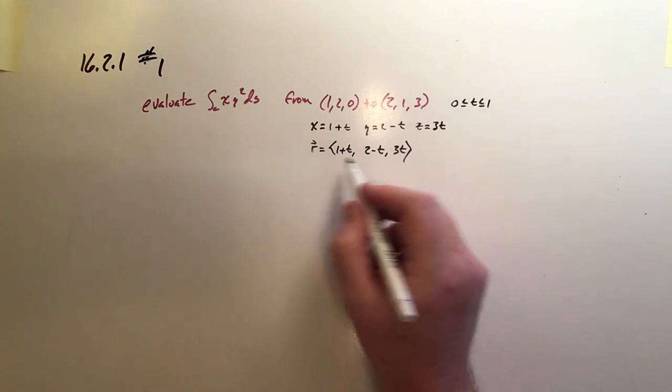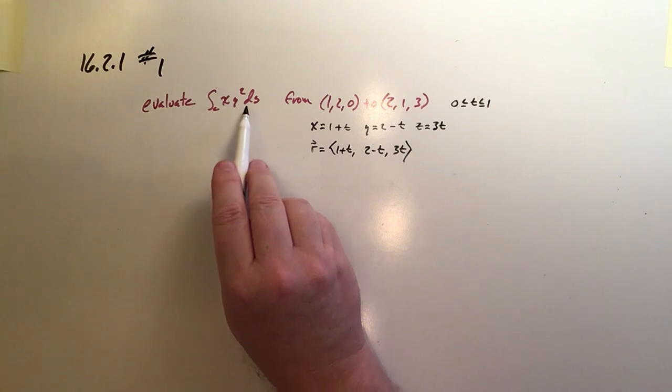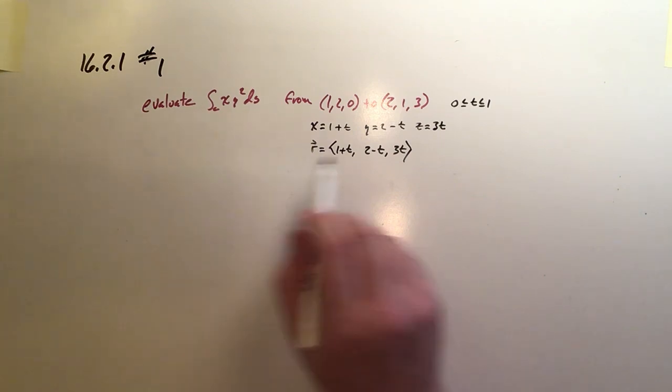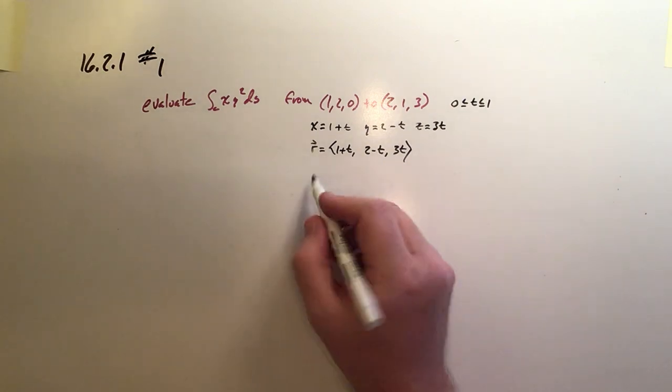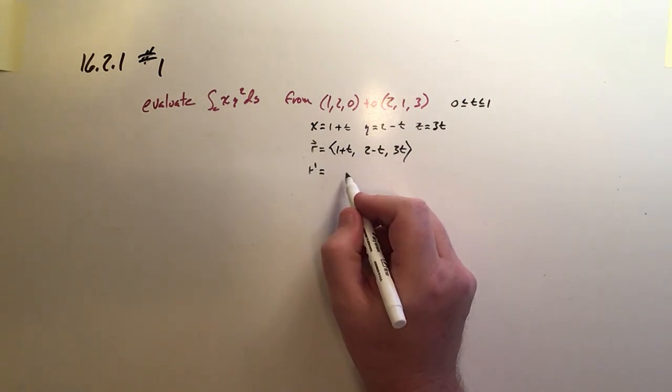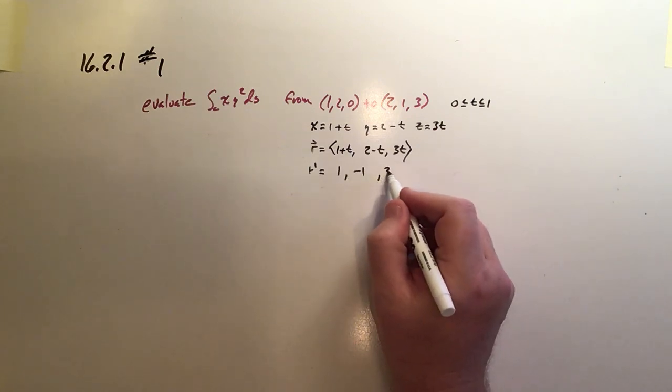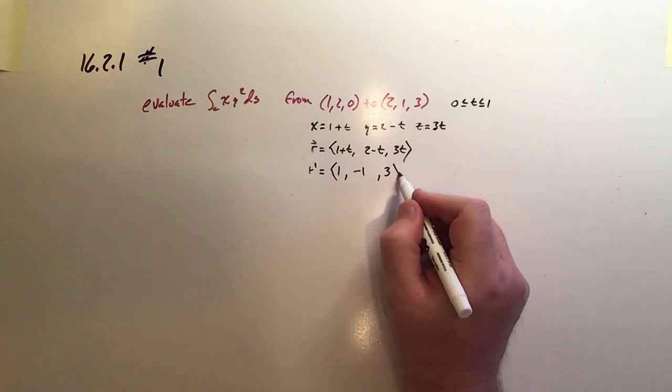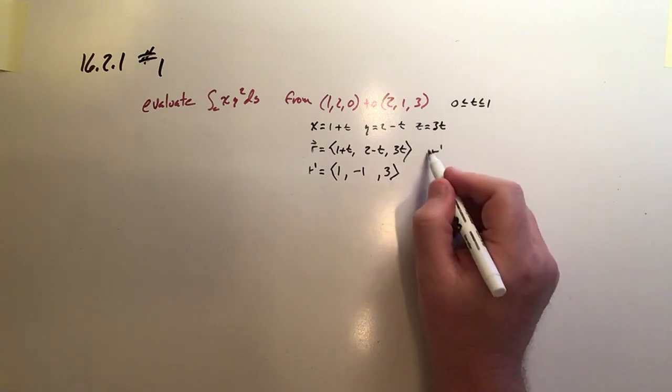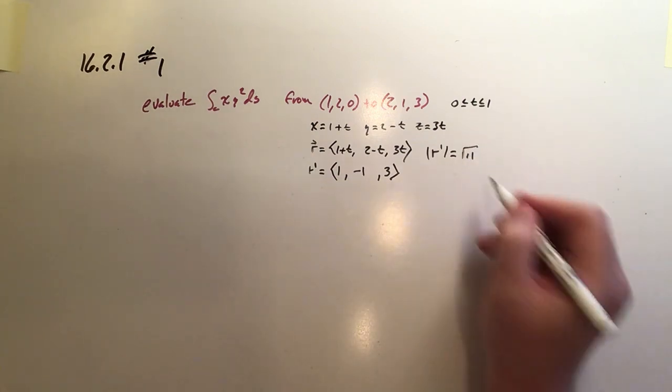And then because we want to evaluate the integral by taking this function times the magnitude of the R vector's first derivative. So R prime would be equal to (1, -1, 3). And of course, the magnitude of that R prime is going to be the square root of 11.